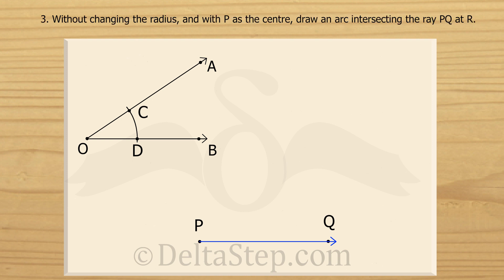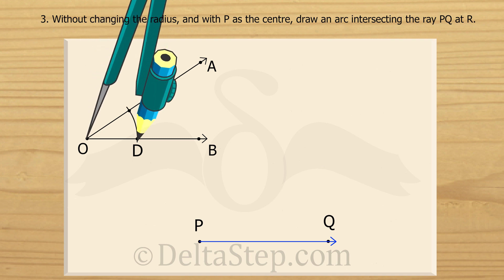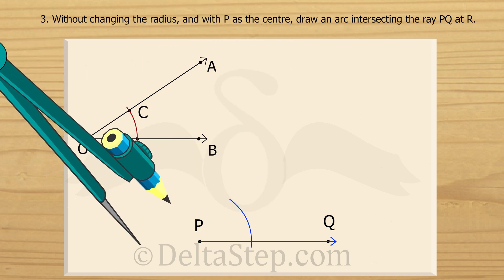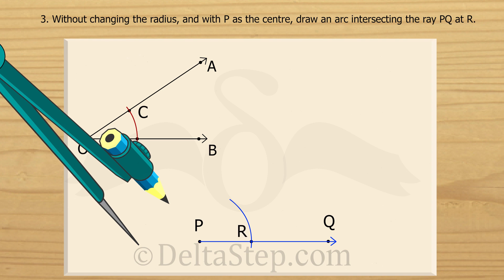Then taking P as the centre and the same radius as before — without disturbing the compass radius — we draw a second arc to meet PQ at point R. It is important to note that the radius used to find points C and D must not change. We will learn the significance of this towards the end of the video.